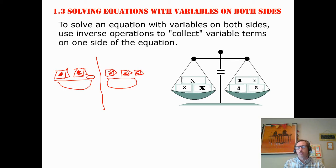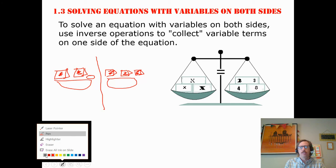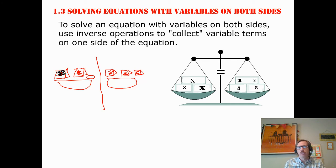Our goal is to find out how many gold coins are in each paper bag. Well, in order to solve the problem, we need to move or collect the paper bags on one side. And so that means if we want to remove the one paper bag here, we subtract one x here, we're going to have to subtract that x on this side.